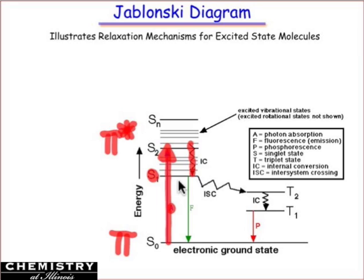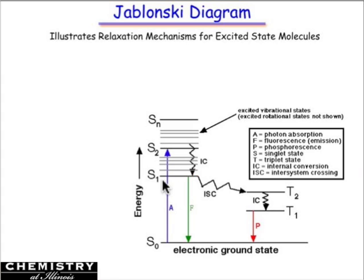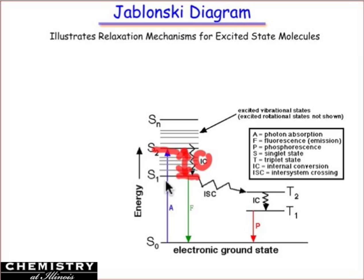The S1 state may live for several nanoseconds before it either undergoes intersystem crossing — which is how phosphorescence comes about — or, more commonly, after relaxing to the S1 state, the molecule sits in an excited state for a nanosecond or so, then emits a photon and returns the electron to the ground state, producing visible light. The Stokes shift arises because there is a difference in energy between absorbance and fluorescence — the molecule relaxes from a higher excited state to S1, and that energy difference corresponds to the Stokes energy.